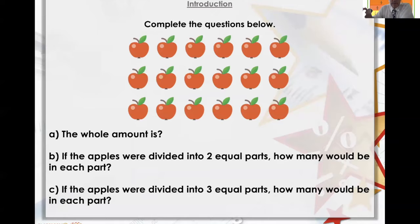Making equal parts. We did some of this yesterday, so let's just remember yesterday's. Complete the question below. The whole amount is 1, 2, 3, 4, 5, 6, 7, 8, 9, 10, 11, 12, 13, 14, 15, 16, 17, 18. Six times three is 18. If the apples were divided into two parts, how many would be in each part? Eighteen divided by two. Let's put a line down the middle there. Three, six, nine.